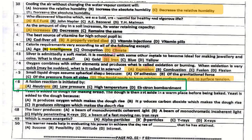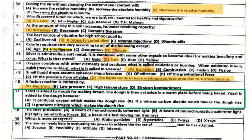Question number 46: Fusion reaction is initiated by neutrons. Question number 47: Yeast is added to dough for making bread. The dough is then set aside in a warm place before being baked, because yeast produces carbon dioxide which makes the dough rise.